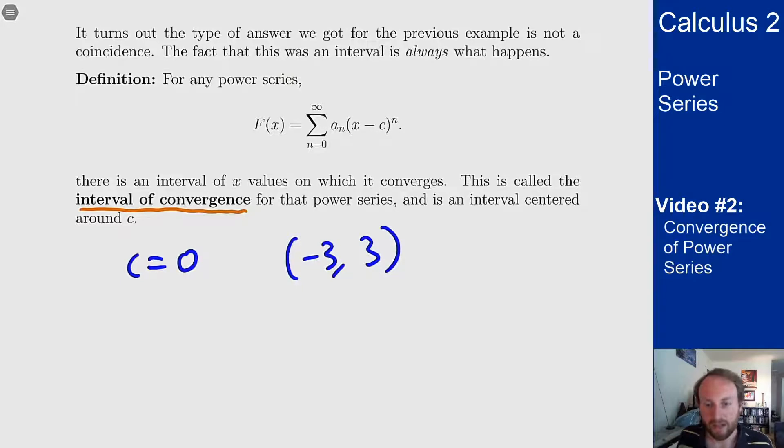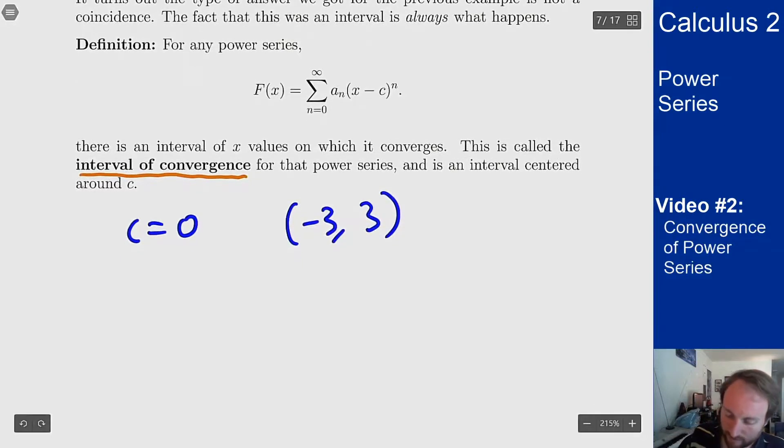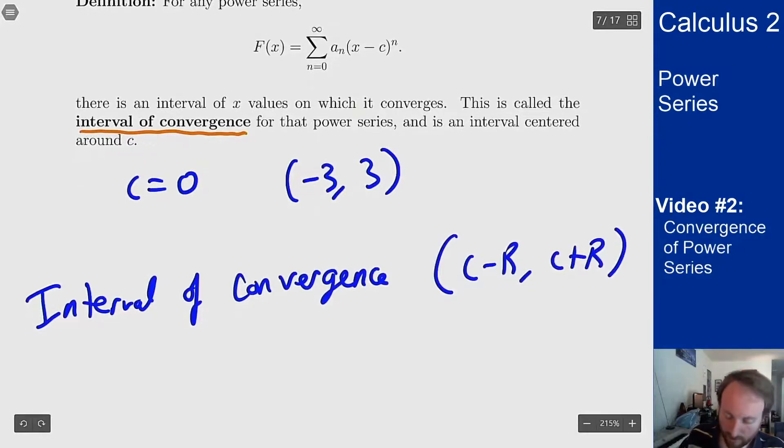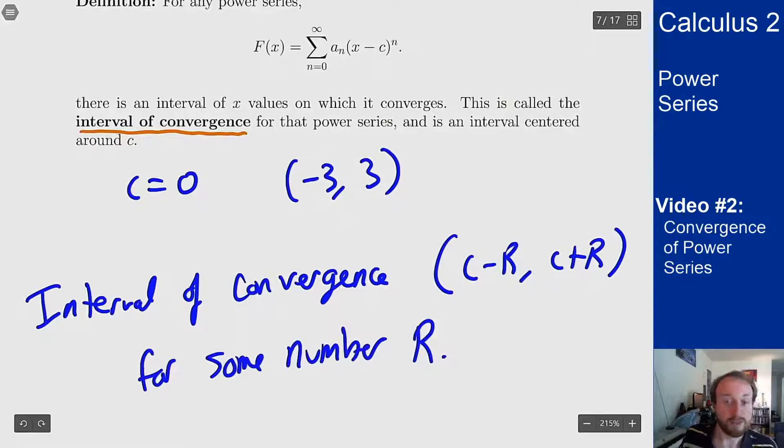So what does this fact mean? This fact means that the interval of convergence is always of the form c minus r to c plus r for some number r. That's what it means to be centered at c. It means it goes the same left, same right. So this r will actually be important to us in a little bit.